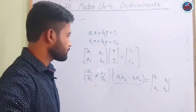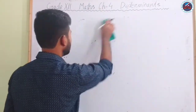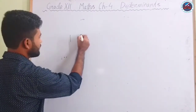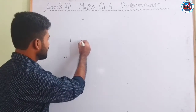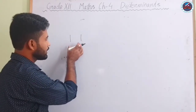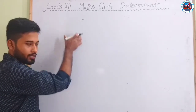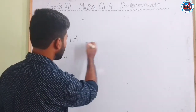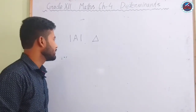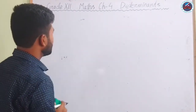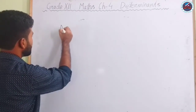We represent the determinant either by two vertical lines on either side of the matrix — don't confuse it with the modulus sign; if the inside thing is a matrix, these two lines denote the determinant — or else we can represent it by the triangle symbol, delta.